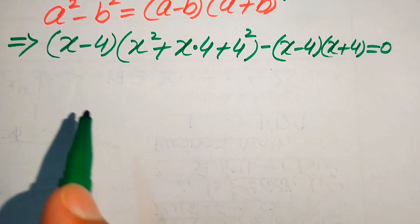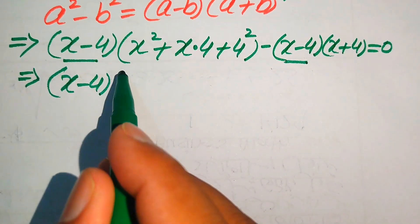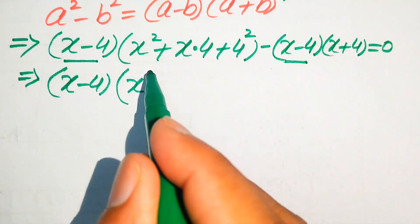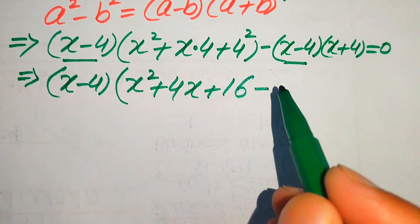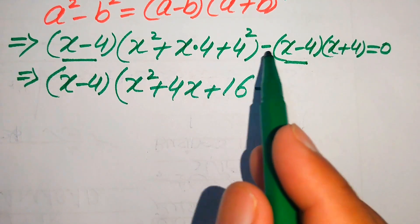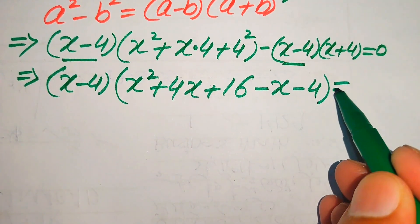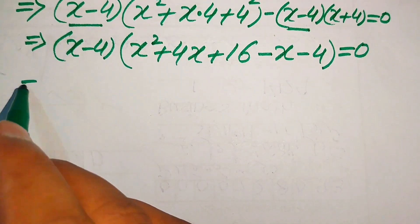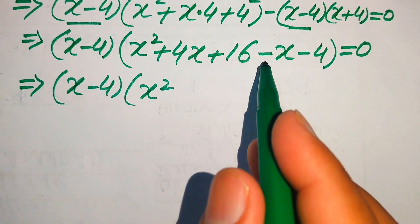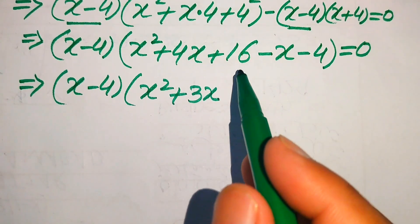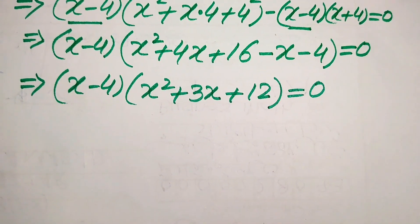Both terms involve (x minus 4), so we take (x minus 4) as a common factor. The remaining part from the first term is x squared plus 4x plus 16, and taking out the common factor from the second term gives minus(x plus 4), which becomes minus x minus 4. Simplifying: (x minus 4)(x squared plus 3x + 12) equals 0.